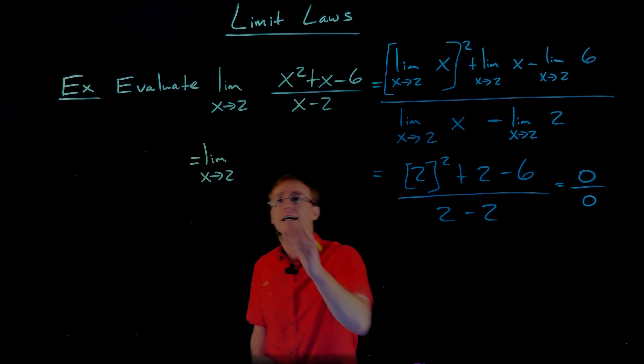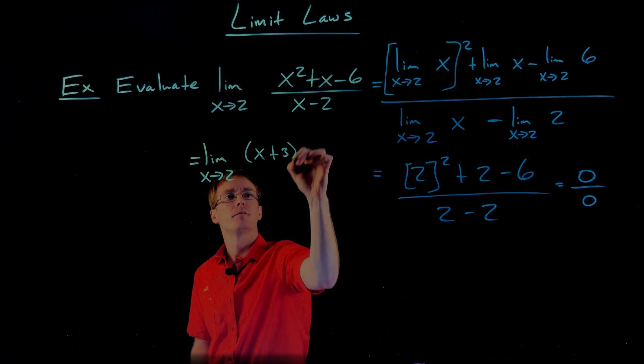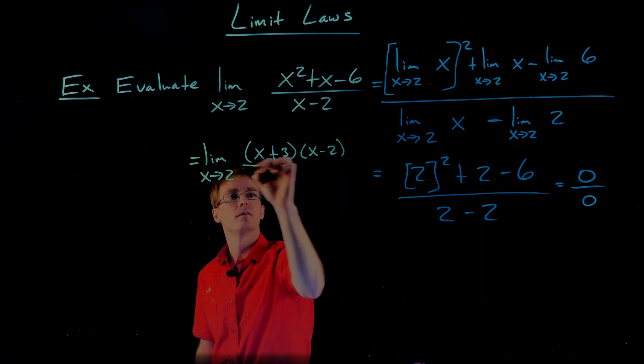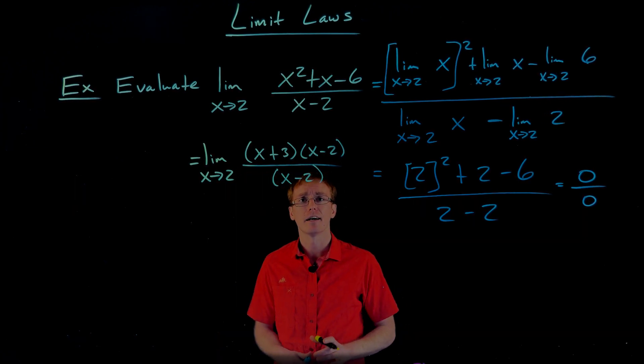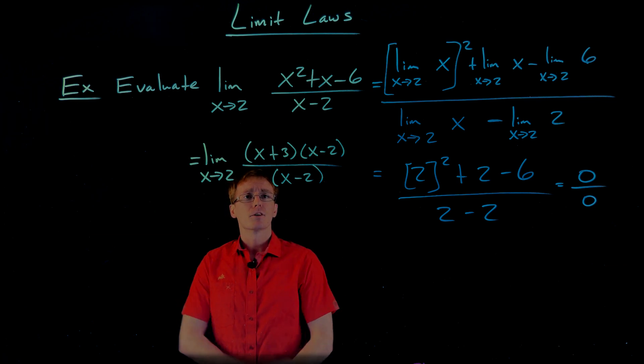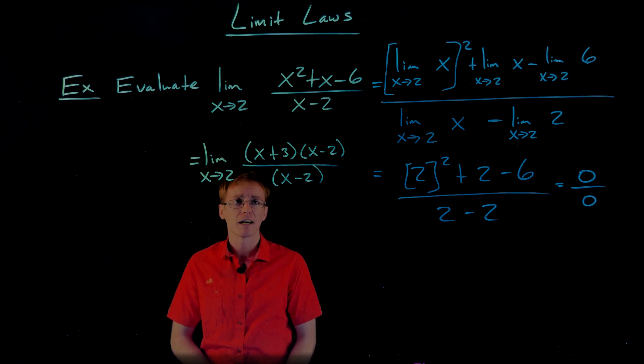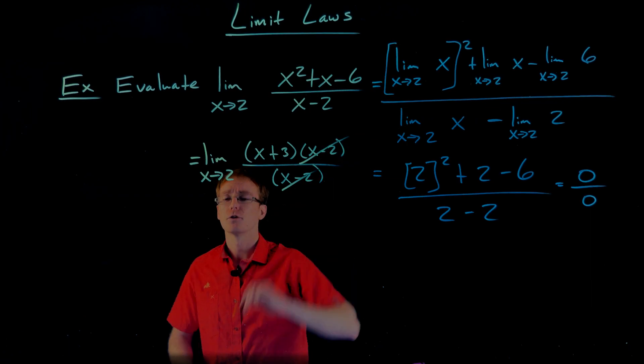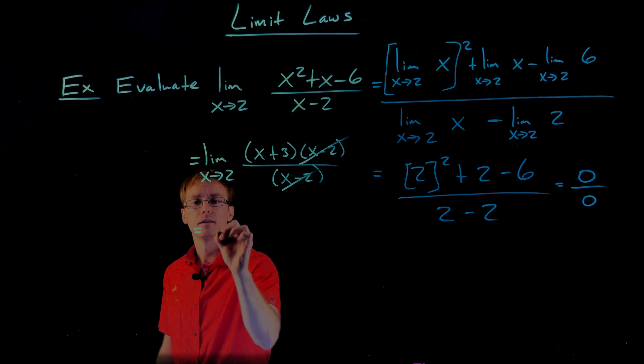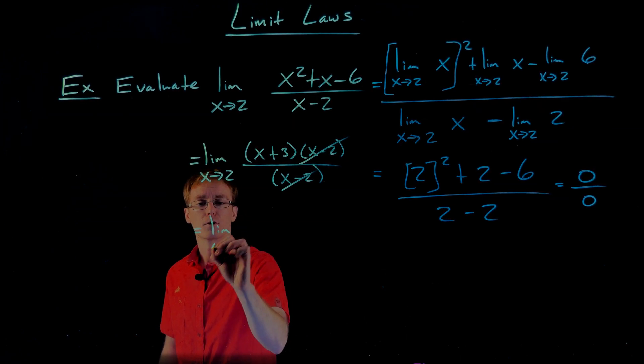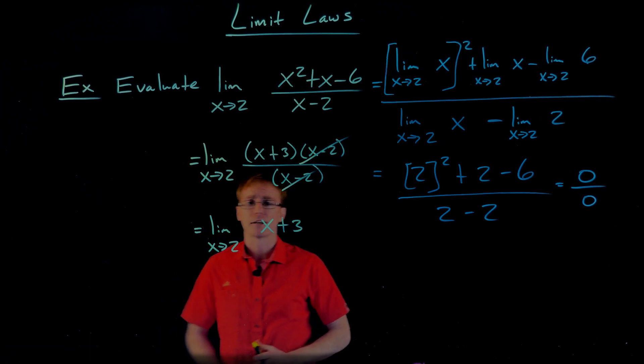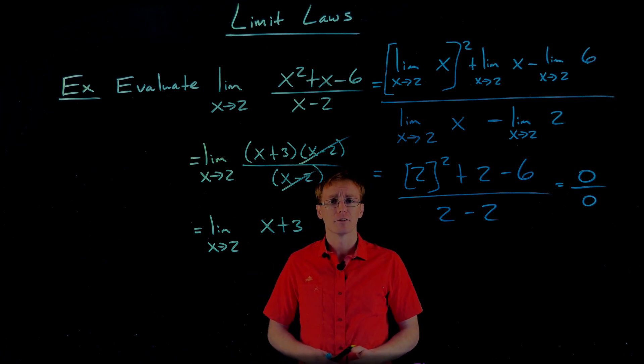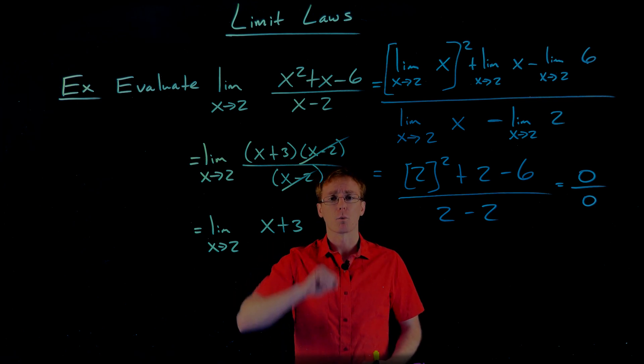Remember, the numerator factored as x plus 3 times x minus 2. And the denominator is already factored. Maybe we'll just put that in a set of parentheses to see how it's going to simplify. So we've got x plus 3 times x minus 2 divided by x minus 2. Now we can cancel those common factors of x minus 2 out. And we're going to now write this as the limit as x approaches 2 of the function x plus 3.